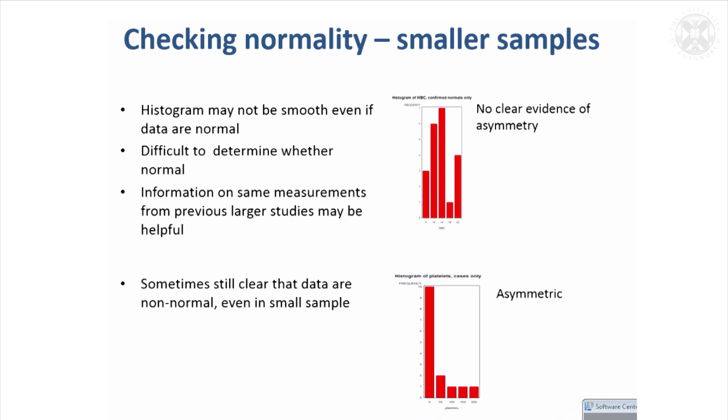Smaller samples make it difficult to check normality, so you might want to resort to other studies that have made the same measurement. If the data were assumed to be normally distributed there, that could be good enough to use a parametric test.